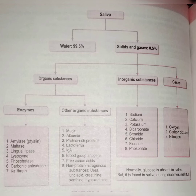The composition of saliva contains 99.5% water and 0.5% solids and gases. The gases — oxygen, carbon dioxide, and nitrogen — are commonly present in dissolved form. Inorganic substances include sodium, calcium, potassium, bicarbonate, bromide, chloride, fluoride, and phosphate. These are the special minerals and chemicals dissolved in saliva.